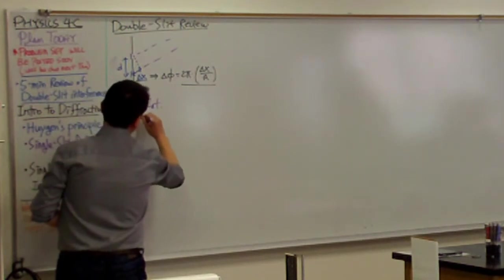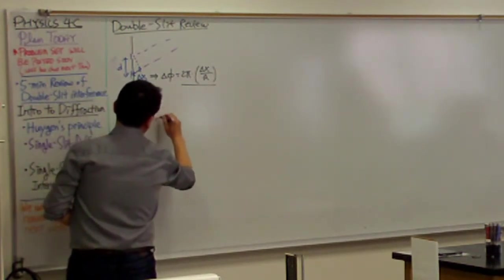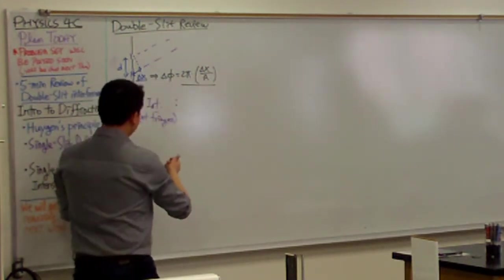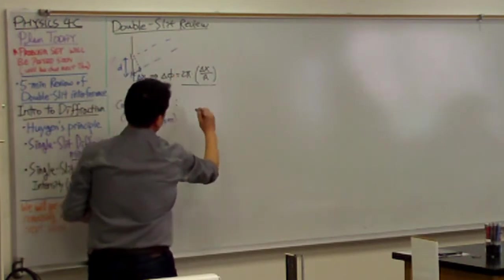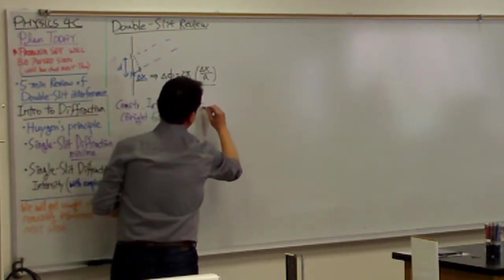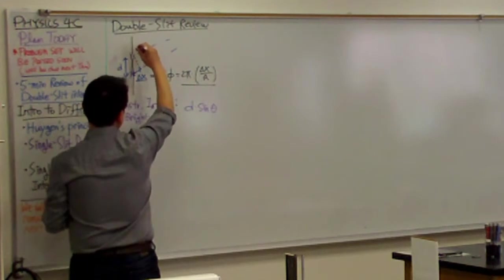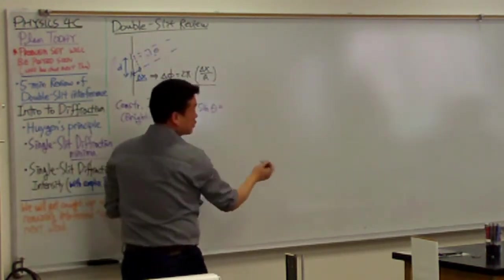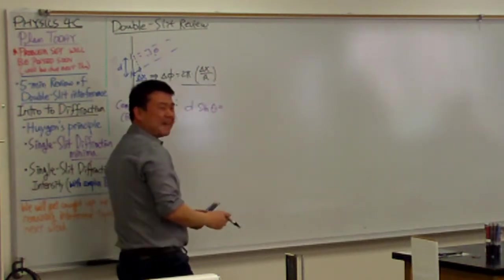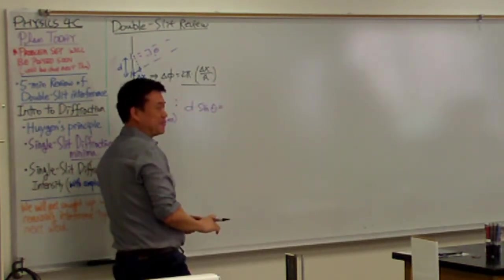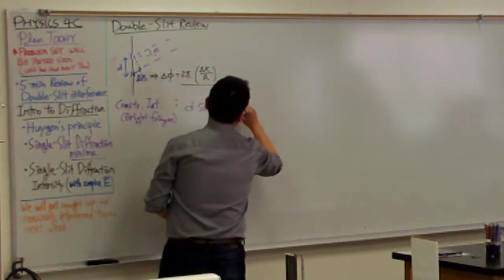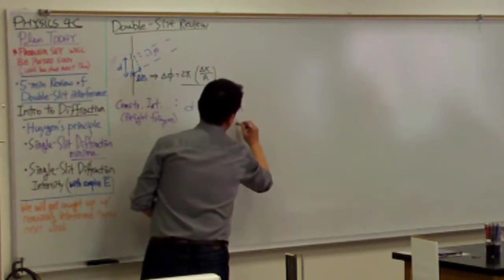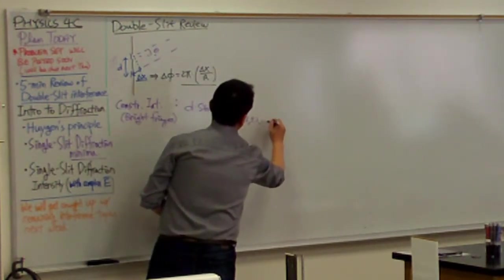The relationship we derived last time for constructive interference — these would be the bright fringes that you see — is that this separation between the slits times sine of the angle theta is equal to some integer multiple m times lambda, where m is an integer. So m goes from zero, plus or minus one, plus or minus two, and so on.